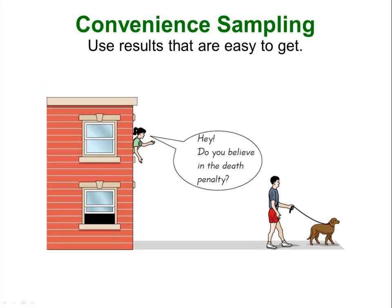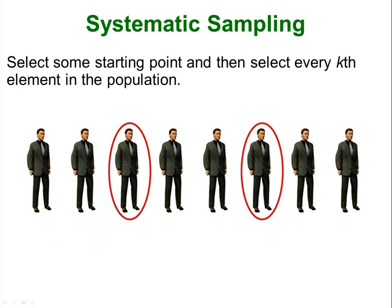Convenient sampling is a type of sampling where all you are doing is collecting data from things that are convenient to you — so maybe you are just collecting samples from people in your class, people in your school, people in your building, people in your neighborhood, whatever it happens to be. Systematic sampling is where you have a group of data — objects, people, numbers — and you decide to pick every 7th number, every 100th number, or in this case every 3rd number.